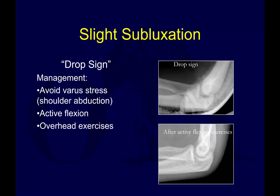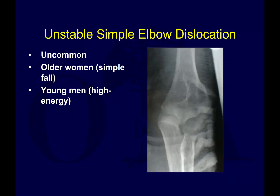To avoid subluxation or loss of concentric reduction, try to avoid varus stresses and encourage some active flexion — typically you won't have a problem. You can have an unstable simple elbow dislocation, which can occur in older women or as part of high-energy trauma, where you can't get it to reduce and stay reduced. In these cases, you may have to treat operatively to restore articular congruity, and perhaps consider hinged or another form of external fixation to maintain the reduction. When relying only on soft tissue repairs, an ex-fix can be helpful.